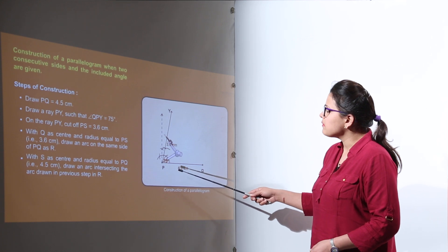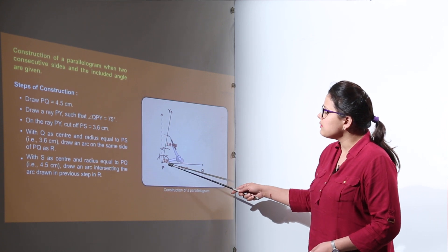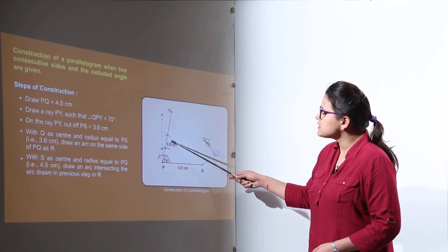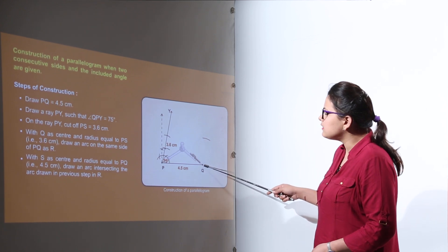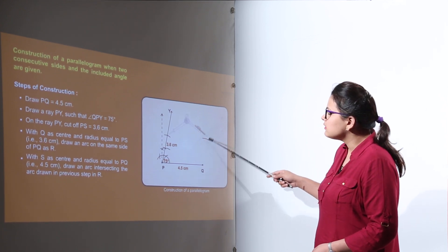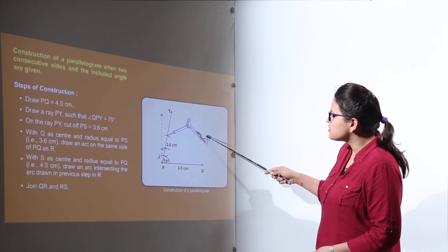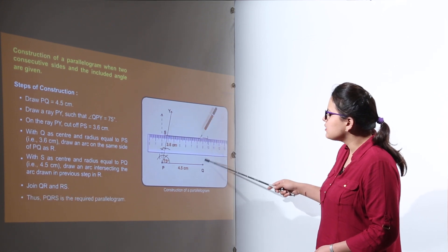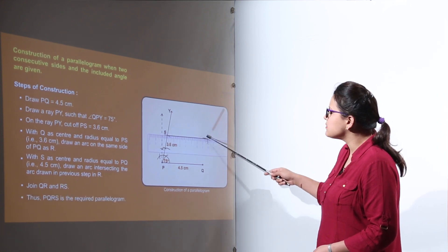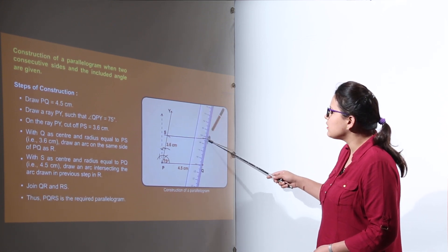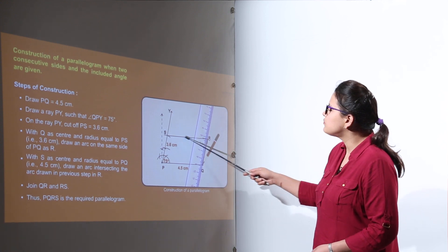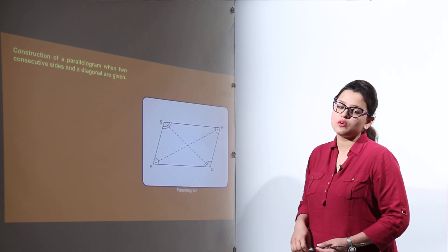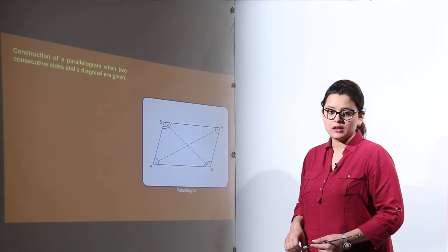The next step is making PS equal to 3.6. Take Q as center and radius equal to the measurement of QR, and intersect the arcs. Now both arcs intersected have to be joined with the rest of the points to get the required parallelogram.